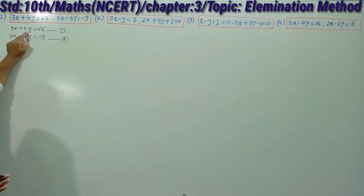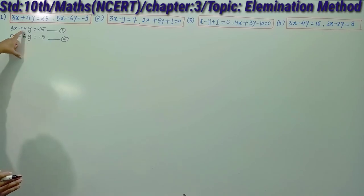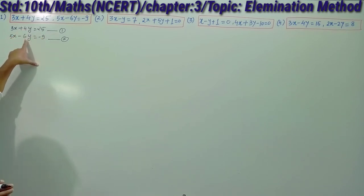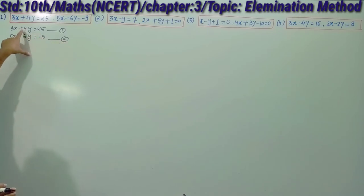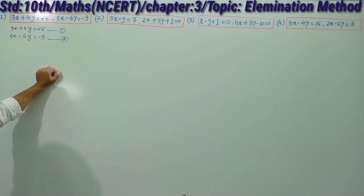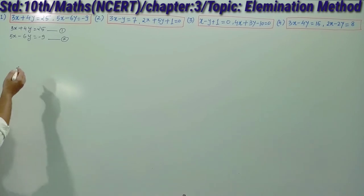Similarly, if you want to eliminate y, the coefficient of y is 4 in the first equation and 6 in the second equation. The coefficients should be made equal, so the first equation will be multiplied by 6 and the second equation will be multiplied by 4. In this way you can get the coefficients of y equal to 24 in both equations, and then you add or subtract to eliminate the variable.